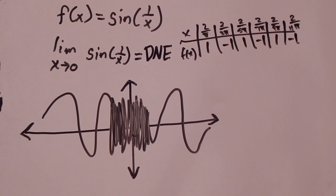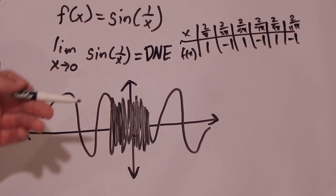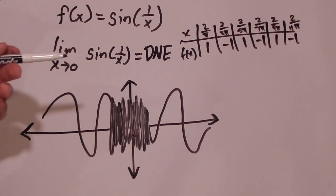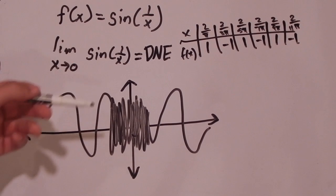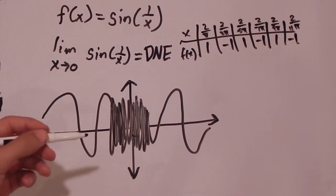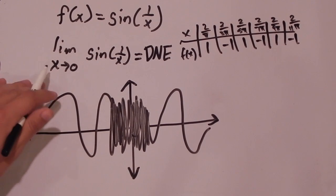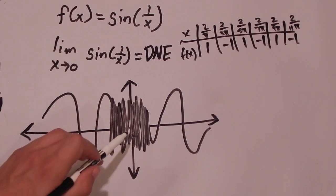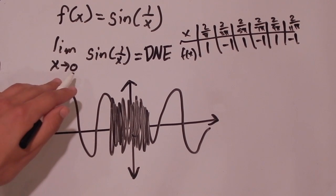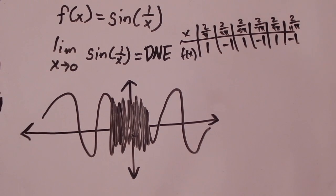So that was your first taste of limits. We went over three examples: the first was a classic example where the limit exists, and the next two were examples of how a limit cannot exist. Those are important to keep in mind, as existence will come into play later. Remember: with limits, you're looking at how x approaches c — you don't care what f of x is at c. You care what f of x approaches as x goes to c. That was our first video on limits. Hope to see you guys later.